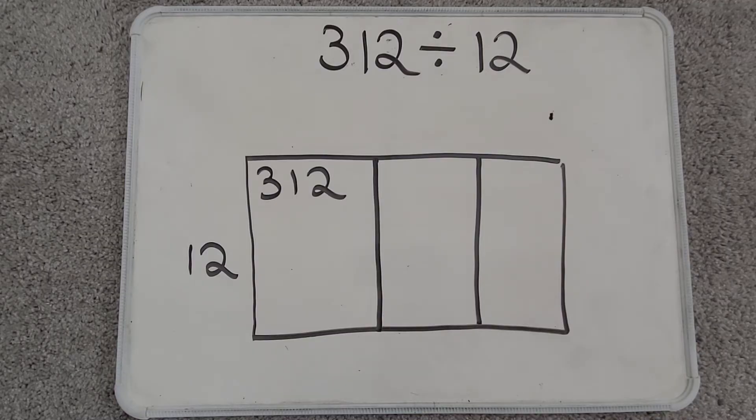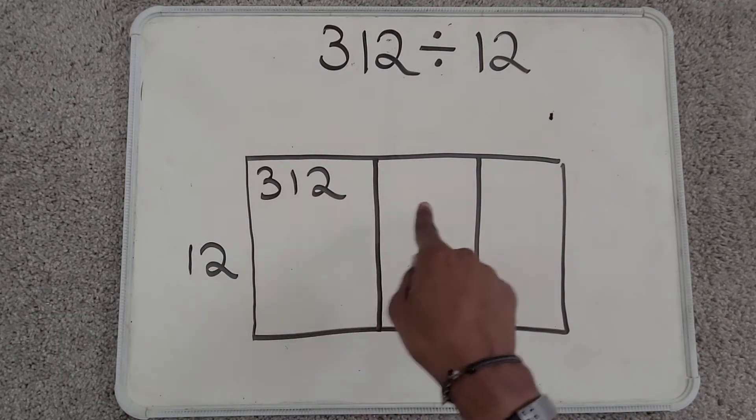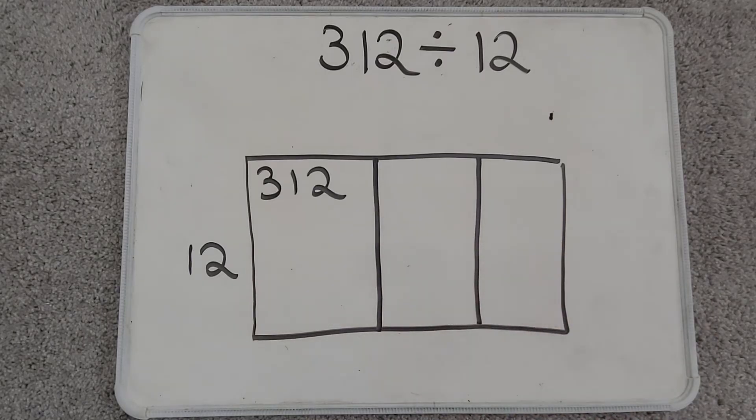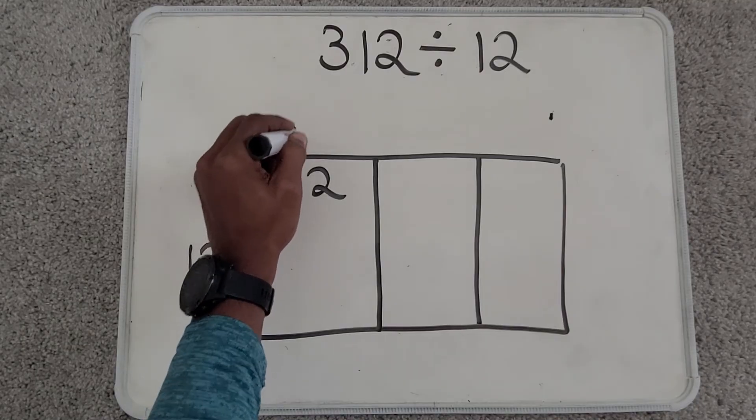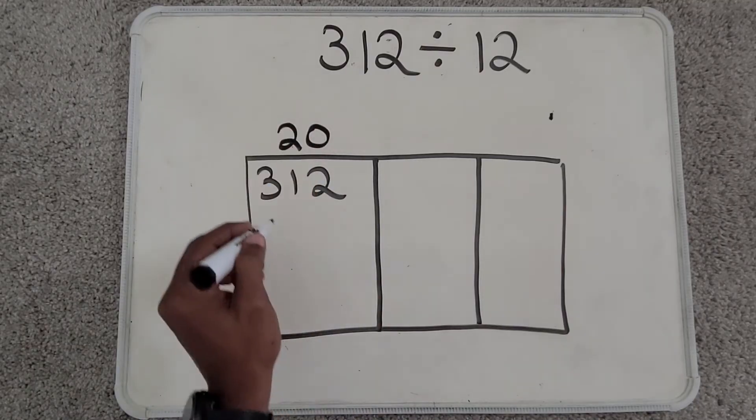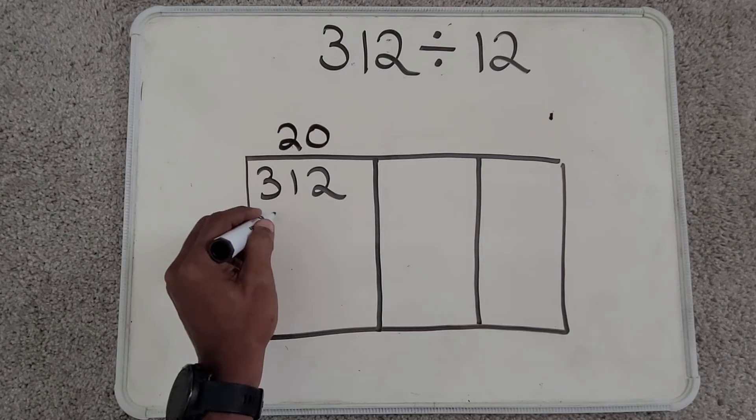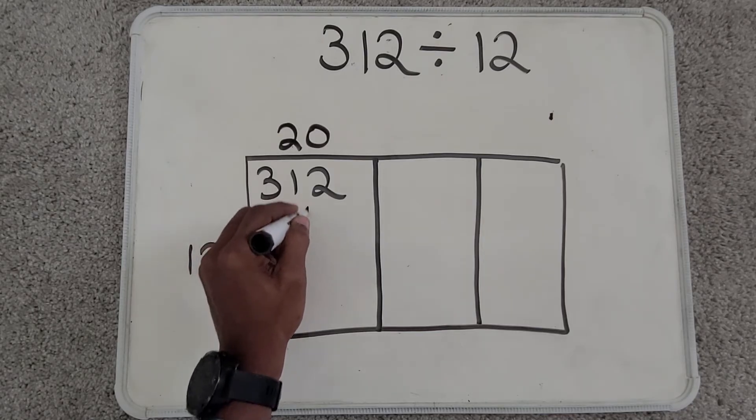Just remember, the lower the number you choose, the more times you're going to have to subtract. I'm going to choose 20. You can choose whatever number you like. I know that 20 times 12, that gives me 240.